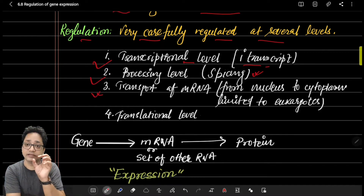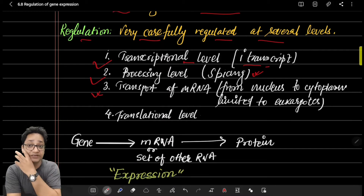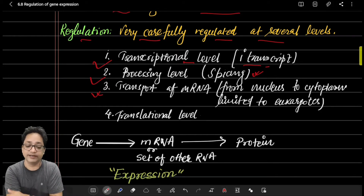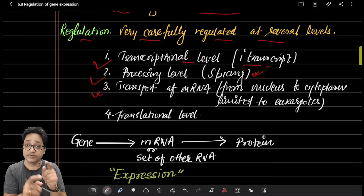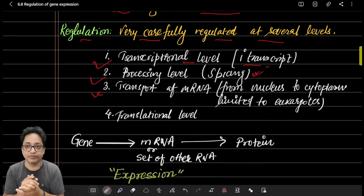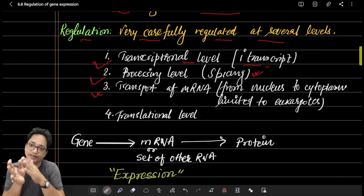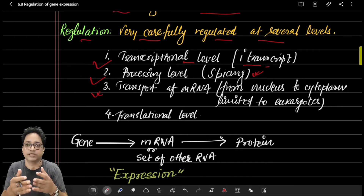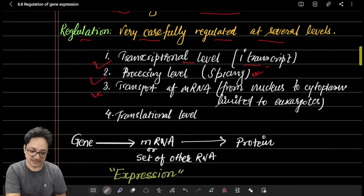Third, at the transport level: in eukaryotes, the 5' end of mRNA is modified with a 7-methyl guanosine cap, and the 3' end undergoes polyadenylation. This helps the mRNA exit the nucleus. This modification does not occur in prokaryotic cells, which have no nucleus, so synthesized mRNA remains in the cytoplasm where protein synthesis takes place.